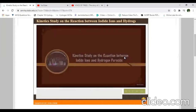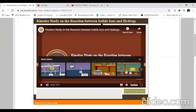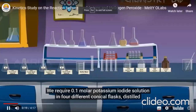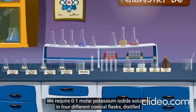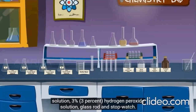For this experiment we require: 0.1 molar potassium iodide solution in four different conical flasks, distilled water, measuring jars, 2.5 molar sulfuric acid solution, 0.05 molar sodium thiosulphate solution, 3% hydrogen peroxide solution, a glass rod, and a stopwatch.